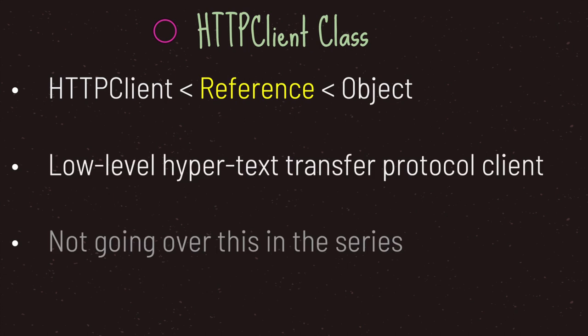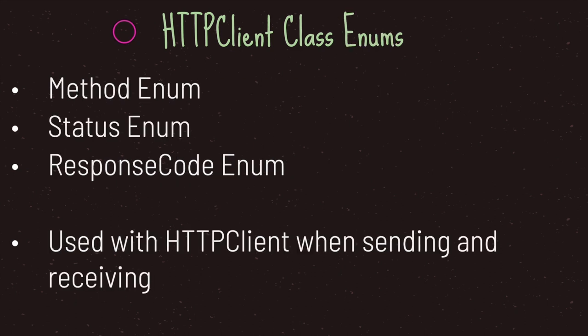Let's dive a little bit into the HTTP client class. The HTTP client class inherits from reference. Basically, the HTTP client class is a low-level hypertext transfer protocol client. Even though we aren't going into too much detail over the HTTP client class, it does come with three enumeration types.